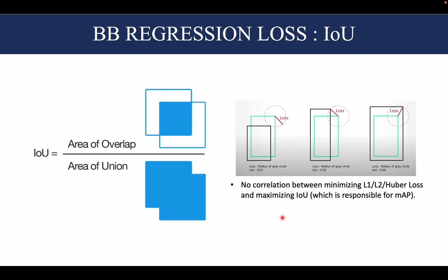This can be seen from the figure on top. If the green is the ground truth box, all the points on this circle would have the same L1, L2, or Huber loss. But we see across all these three cases that although the L1, L2, Huber loss would be the same, IoU loss is not the same, which means that there is no correlation between them.